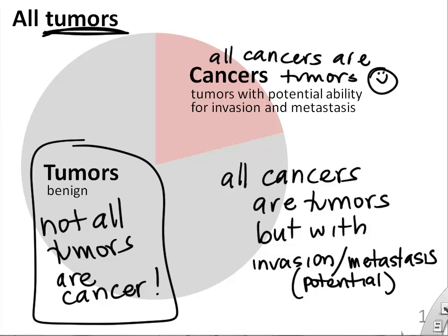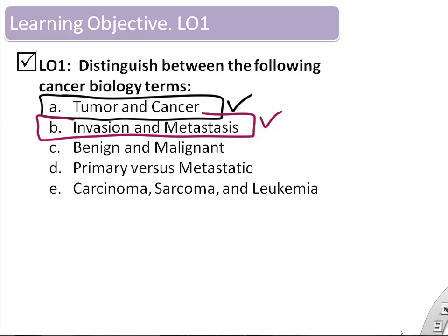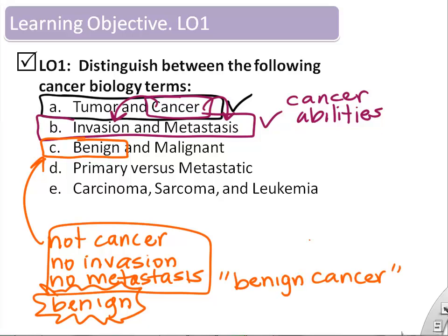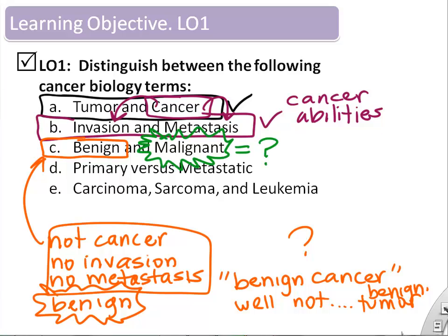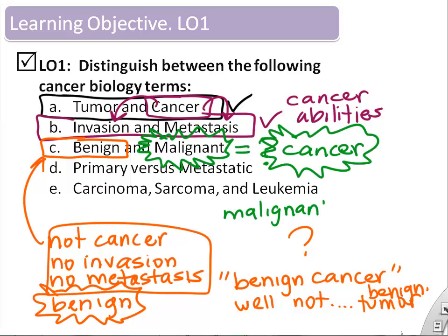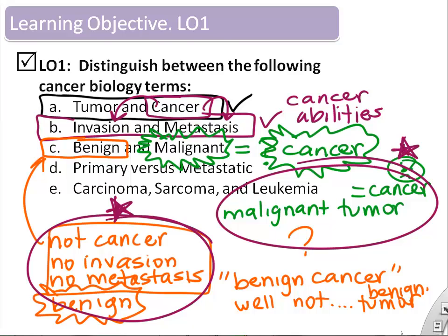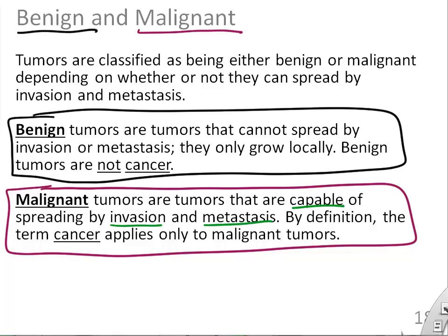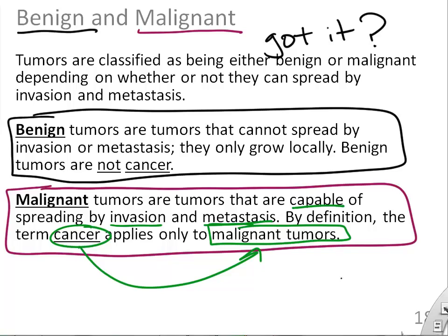More vocabulary: benign is a description for a tumor that is not cancerous because it does not invade and does not metastasize. So sometimes you'll hear 'benign cancer' — what they're really telling you is that this tumor is not cancerous or not yet cancerous. Malignant tumor is basically by definition cancer — a malignant tumor has the ability to invade and metastasize. Benign tumors are not cancer; malignant tumors are cancer. You might also hear people talk about malignancy — they're talking about cancer.